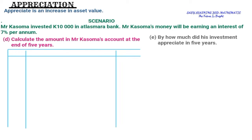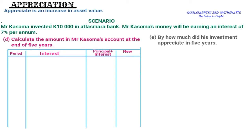The table has four columns: Period (the year number), Interest (the calculated interest for that year), Principal + Interest (the sum), and New Principal (which becomes the principal for the next year). Under each year I'll calculate the interest, add it to the principal, and carry forward the new principal.